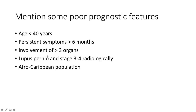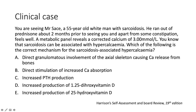Other poor prognostic features: multi-systemic involvement with more than three organs affected, lupus pernio together with Scadding Stage 3 or 4 radiologically, and worse outcomes among Afro-Caribbean patients.